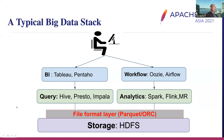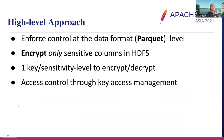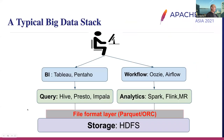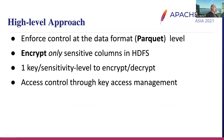In order to support all these access paths, a natural place is the file format layer — at the lowest level, right alongside storage, HDFS, and the OS. We use Parquet and ORC here. From a high-level approach, we enforce control at the Parquet data format level, and we encrypt only sensitive columns in HDFS. We use one key according to sensitivity level to do encryption and decryption, and we provide access control through key access in KMS — the key management system.